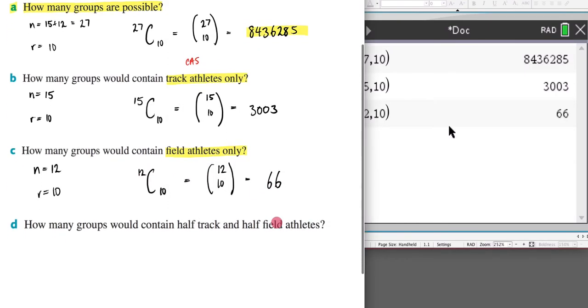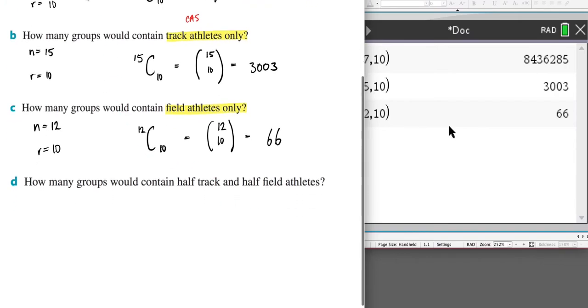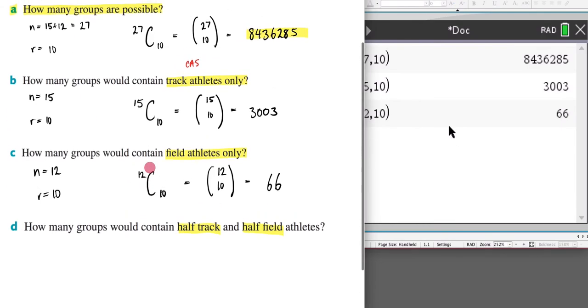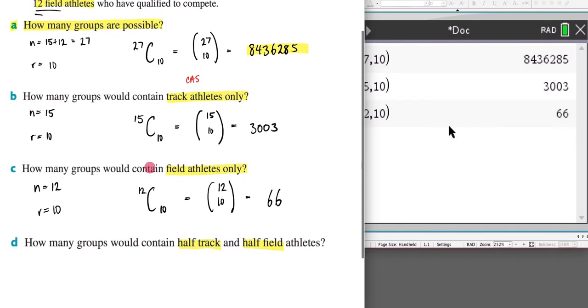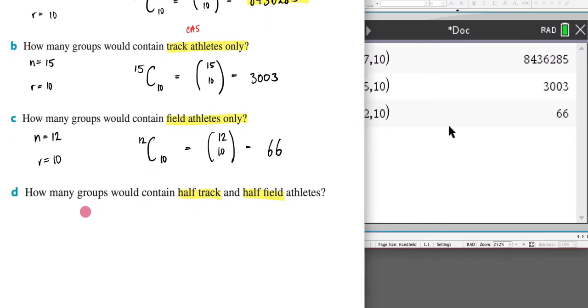Let's now answer the last question we have here, part d, which says how many groups would contain half track and half field athletes. So if half of them... I have 15 students in track and if half my team is going to be made up of them and I know that my team is made up of 10 players, well that would mean that five students are going to be from my track team.